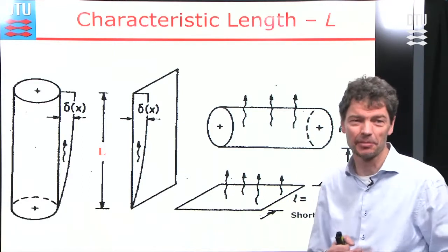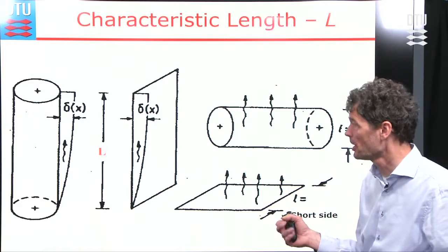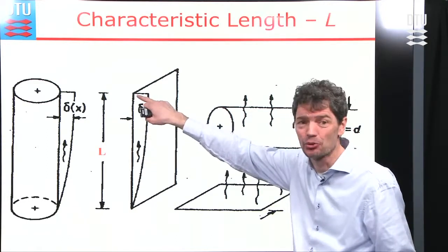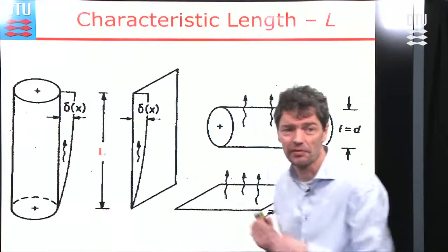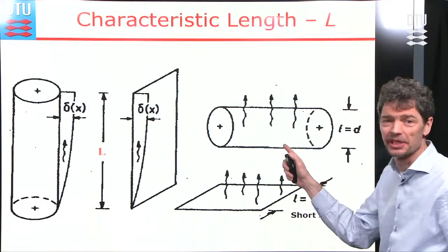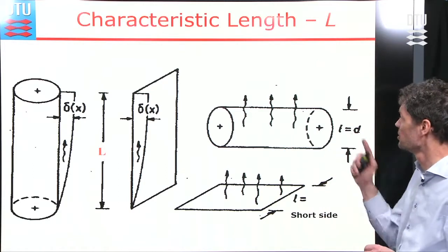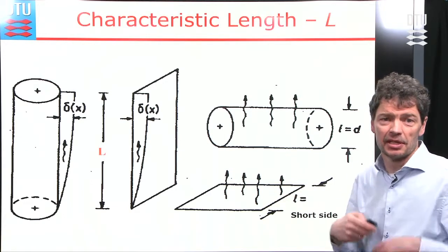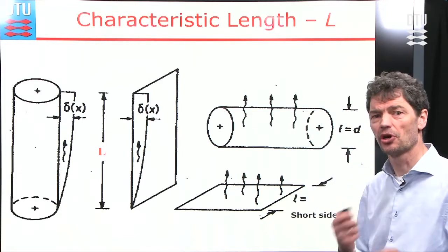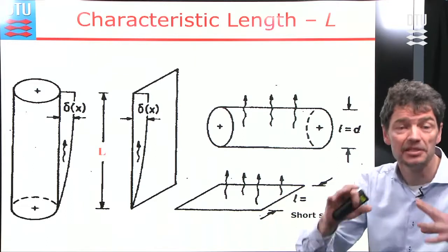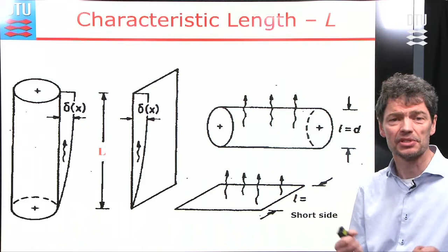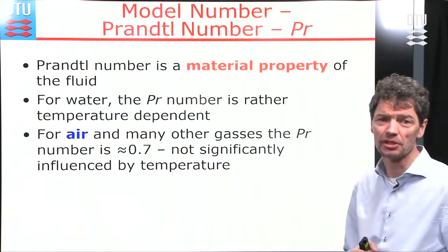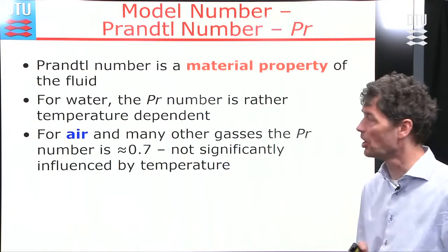There are different characteristic lengths for different geometries. For flow along a plate, it is the plate length. For flow along the exterior of a cylinder, it is measured along the surface, but for flow perpendicular to a cylinder, it is the cylinder diameter. You should check how the author of the empirical investigation defined the characteristic length.